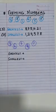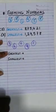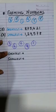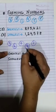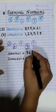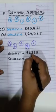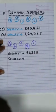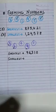Let's have a look at one more example. Now the greatest possible number out of these 5 digits — we write the biggest digit first: 9, then 6, then 3, then 1, and 0. So the number which we have formed is 96,310.